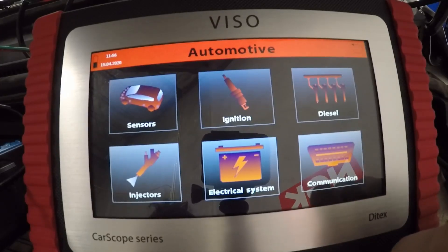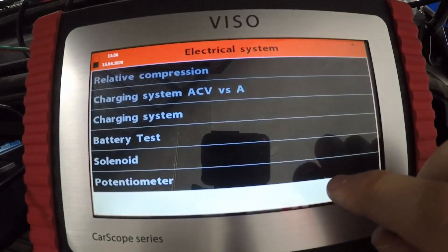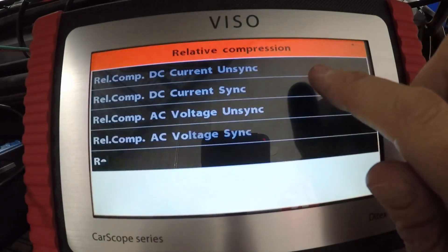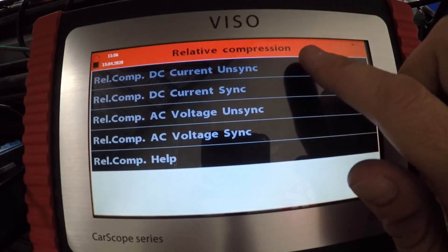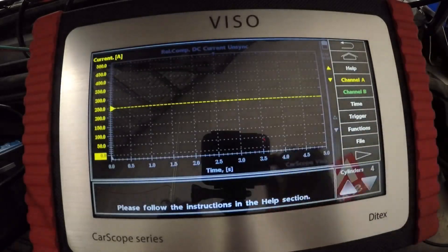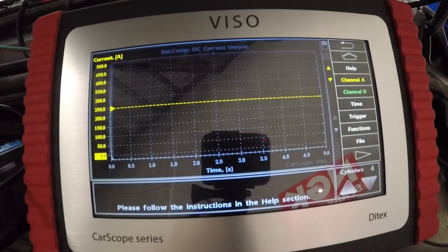All right, what we'll do is we'll go try a relative compression test. So let's go into electrical system, let's go relative compression. Let's go DC current unsynced. Now I have got my amp clamp hooked up around the battery negative cable. We know that I've got an in-cylinder pressure transducer in number one.